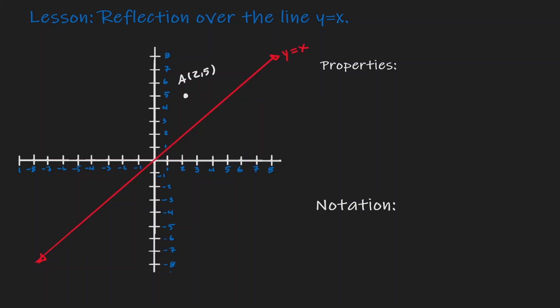The way we can figure out the image of this reflection is by finding the horizontal distance from this point to the line. Within our coordinate point, when y equals 5, our x value is 2. And at the line y equals x, when y equals 5, x equals 5 as well. So we can say that we have a horizontal distance of 3, which is the difference between the x values.